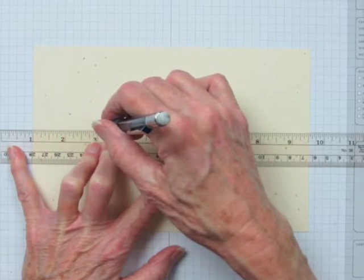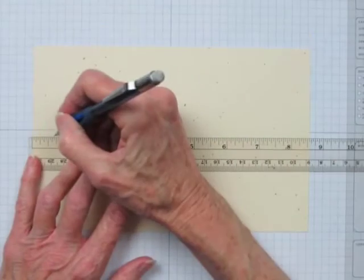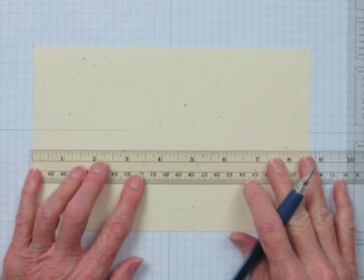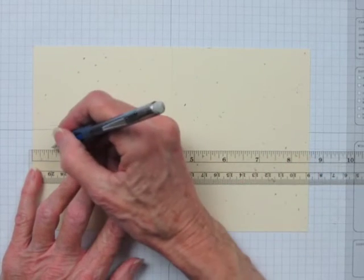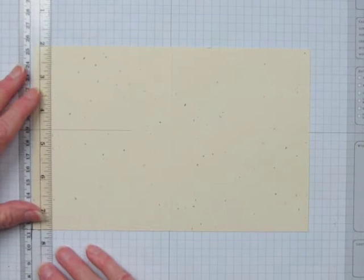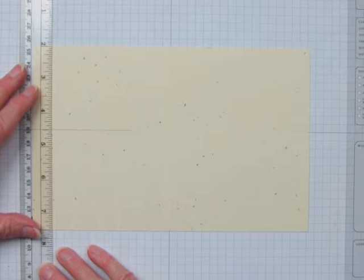Next I'm going to make marks that are 5 eighths of an inch from the left edge of the card. Then I'll take my ruler and draw a line between those marks.